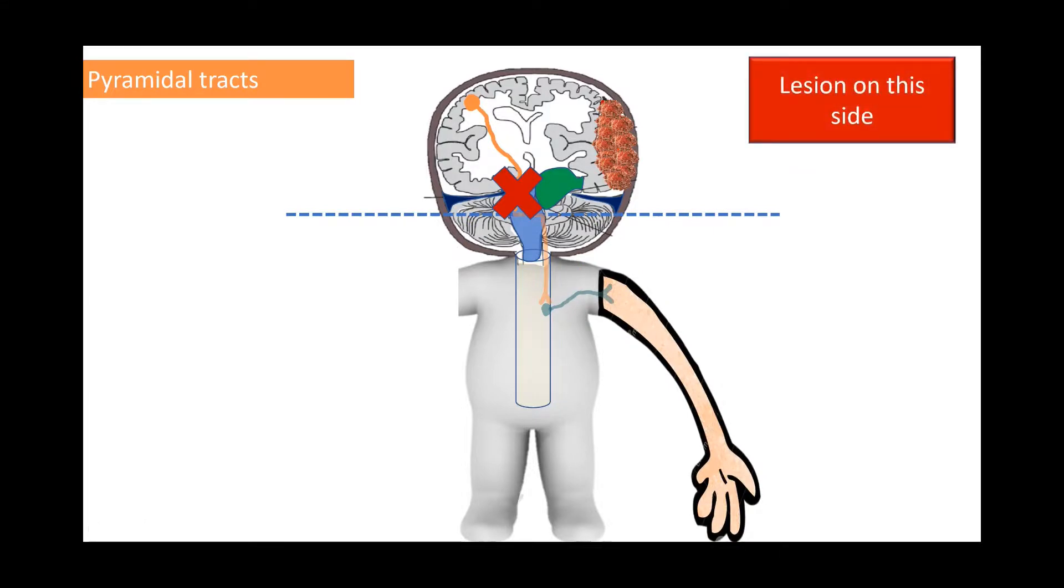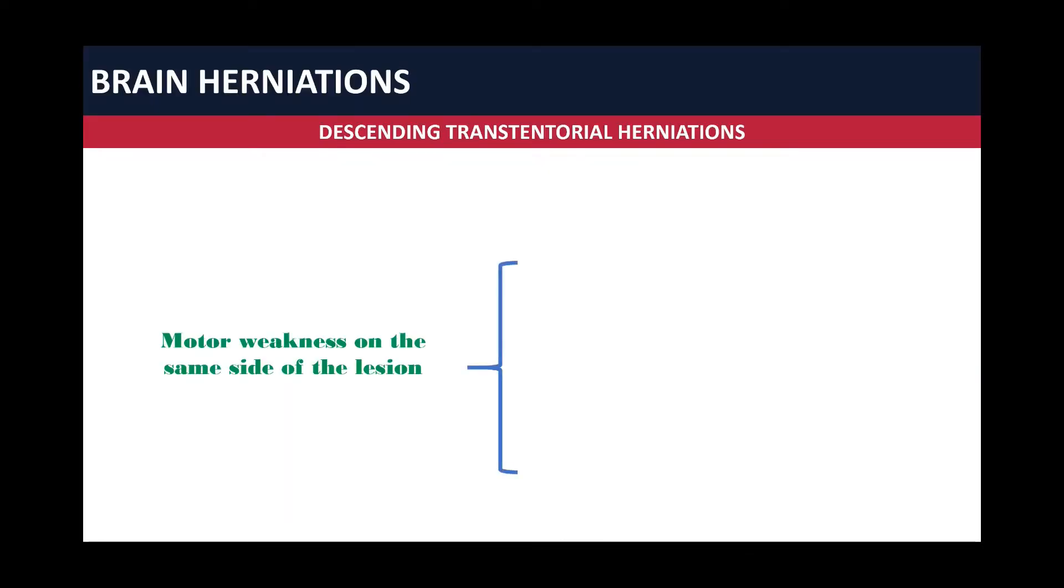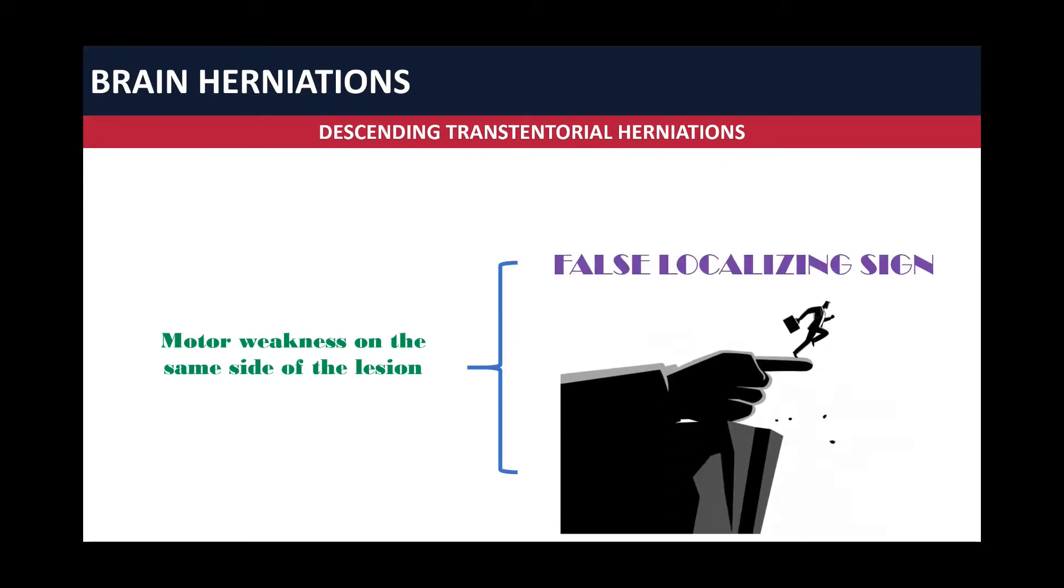To sum up, the lesion of this side will lead to a lesion of pyramidal tracts of the contralateral side, and the patient will present weakness on the same side of the lesion. That's why a motor weakness on the same side of the lesion will lead to a false localizing sign, also called Kernohan-Notch phenomenon.